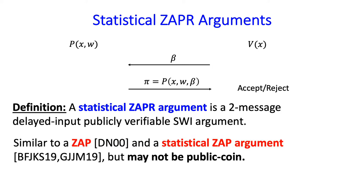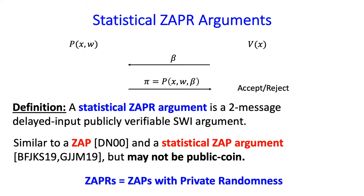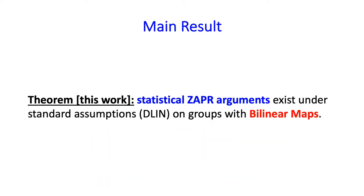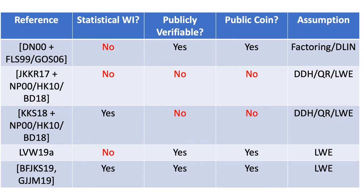This notion is very similar to that of a zap introduced by Dwork and Naur, as well as a statistical zap argument introduced just last year. The difference is that Dwork and Naur's zap is only computationally WI, whereas ours satisfies statistical WI. The difference between our notion and statistical zap arguments is that our notion doesn't require the protocol to be public coin — this first message needs to be sampled independently of x, but may not be a truly random string. In other words, a zapper is a zap with private randomness. So now let's go back and take another look at the prior work.